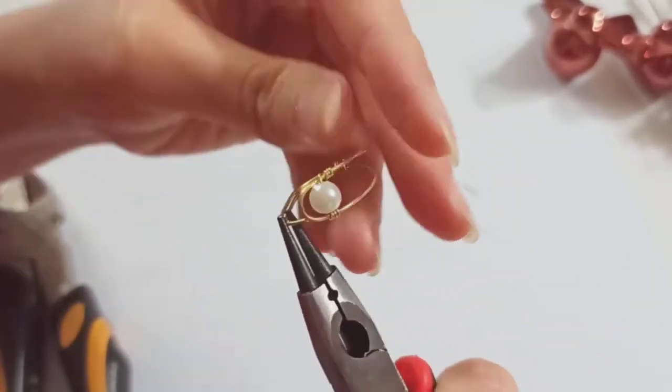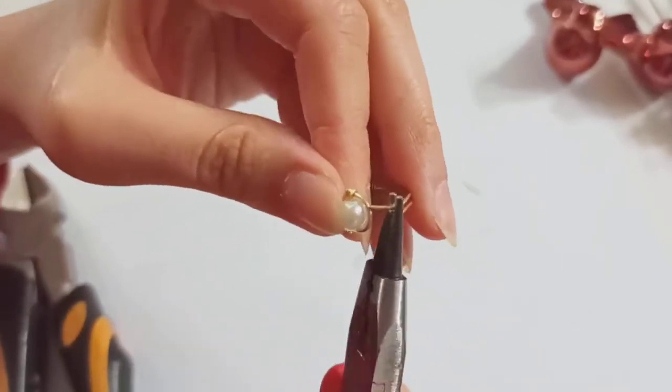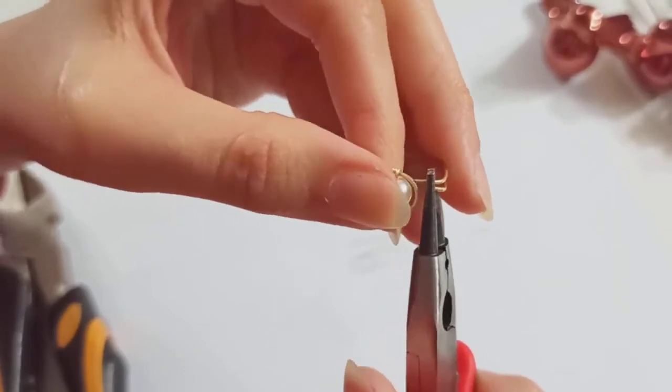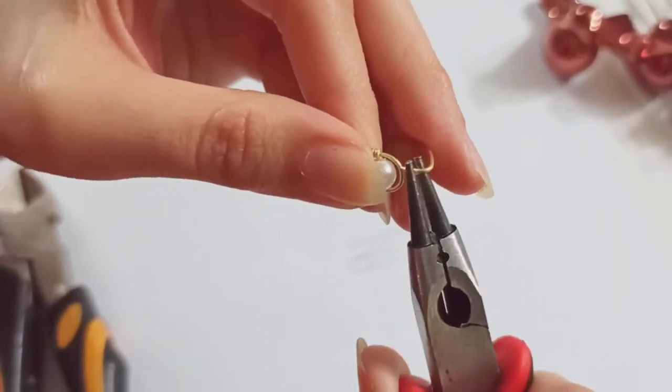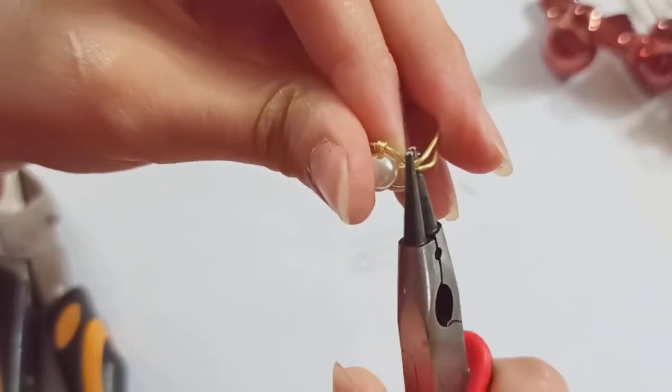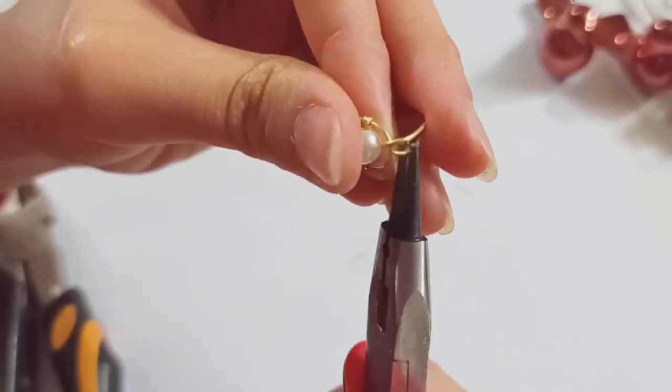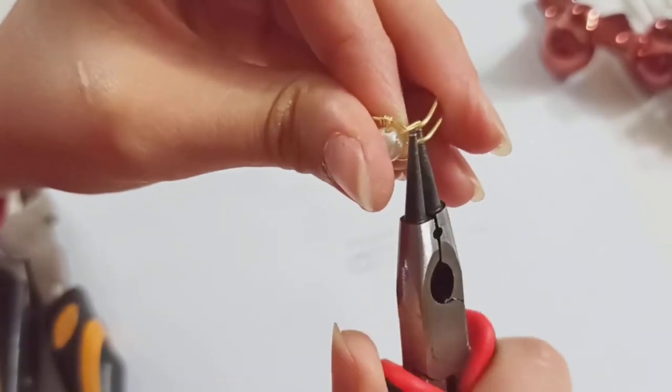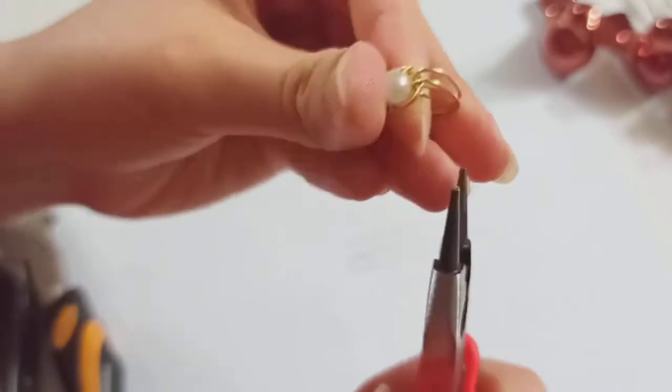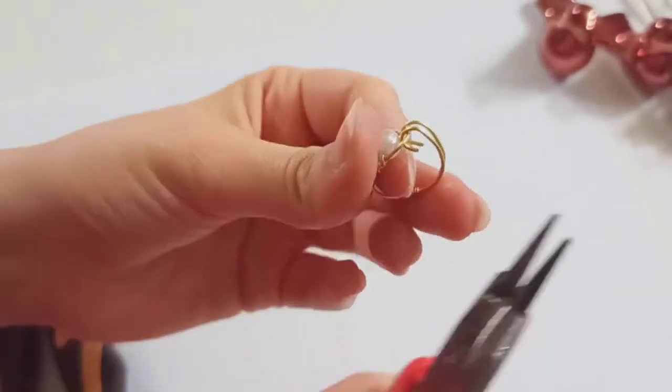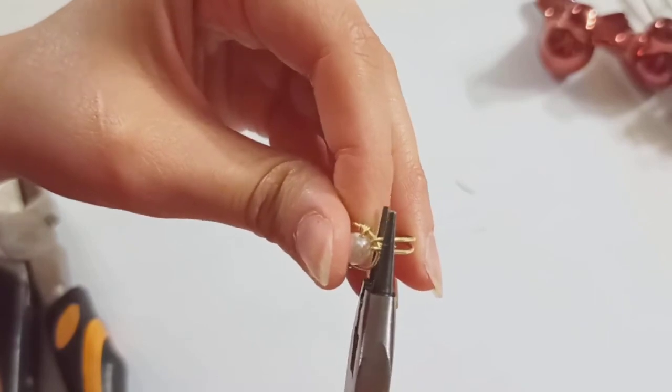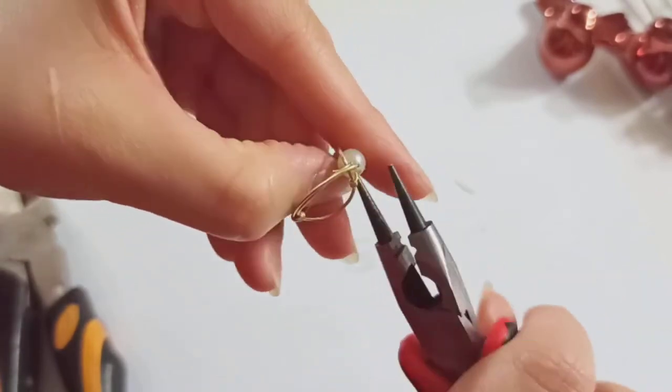At this part so with your round nose pliers make them round and insert them into this part. And at the end push them to be attached to each other.